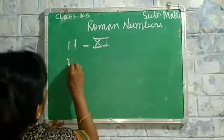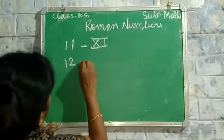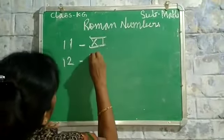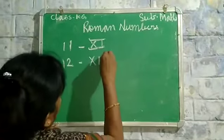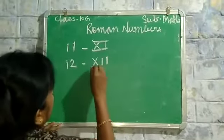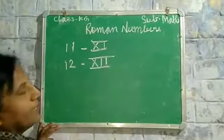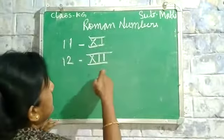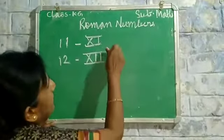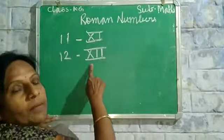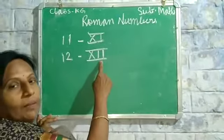Now I will teach you 12. The Roman number is X, I, I. What is this Roman number? X, I, I. The answer is 12.